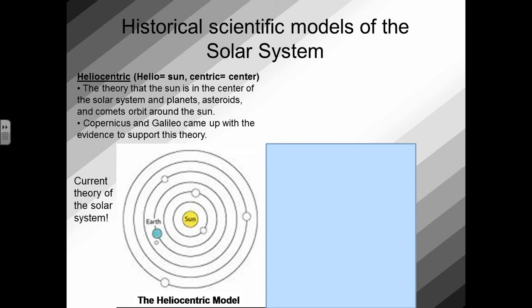The heliocentric model of the solar system is our current theory of our solar system. So this is what we currently believe and have evidence to support that our solar system looks like. However, we didn't always think this. Humankind did not always think that the heliocentric model was the model for the solar system.